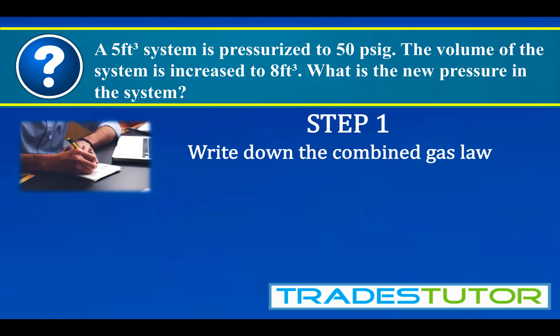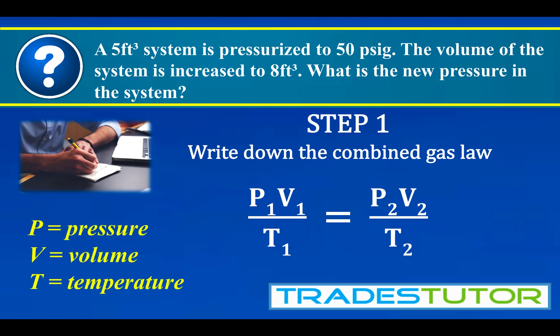Step number one, write down the combined gas law. So there you have it. P1V1 over T1 is equal to P2V2 over T2. Now the one on the left-hand side of the equation stands for the initial set of events, and the two on the other side stands for the final set of events. All right, now the variables themselves, P is pressure, V is volume, and T is temperature.